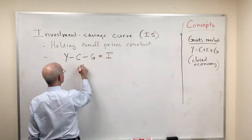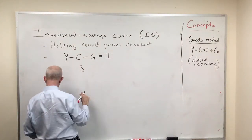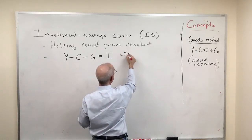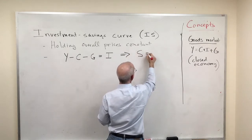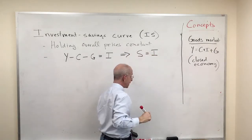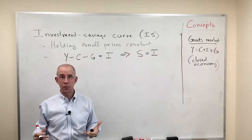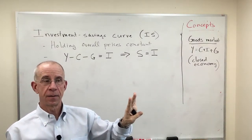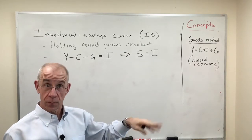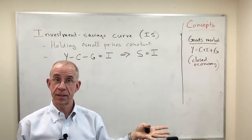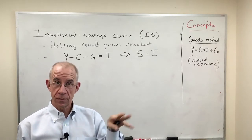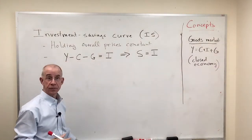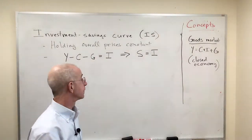Another way of writing that is: savings equals investment. If you take national income and subtract current consumption by the private sector for current goods, and subtract government expenditures on goods and services for the current period, what you're left with is national savings.